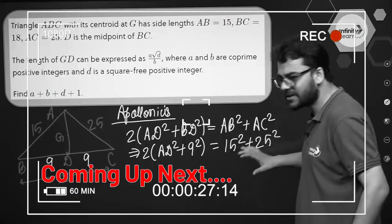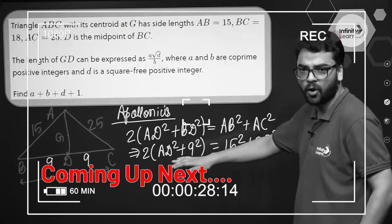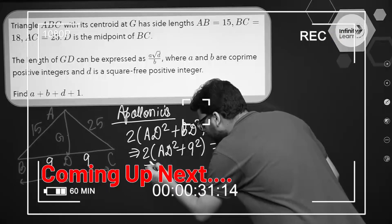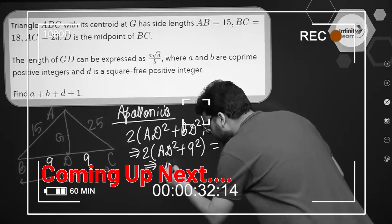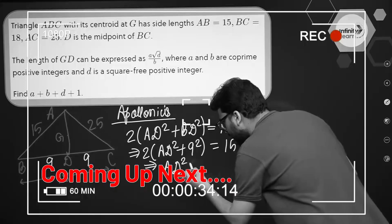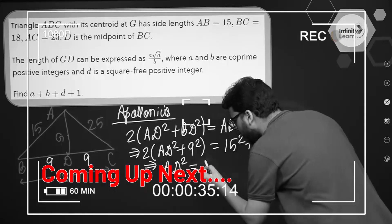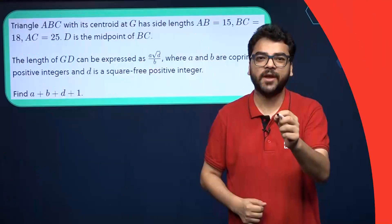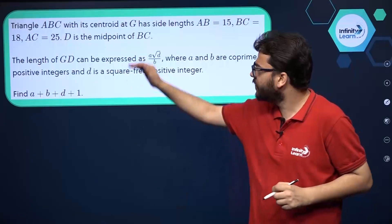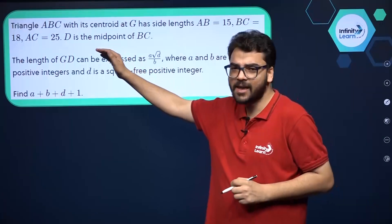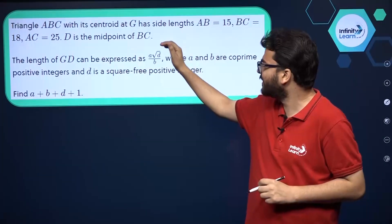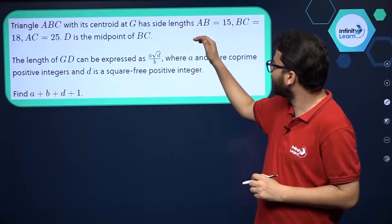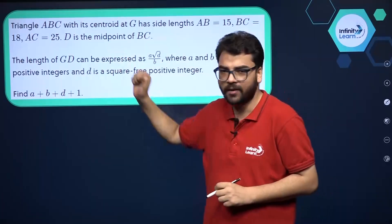If you want to find the value of AD squared, after simplification — skipping some two steps — you will get AD squared is equal to 344. So here we have been given a triangle ABC with its centroid at G and the three side lengths given.